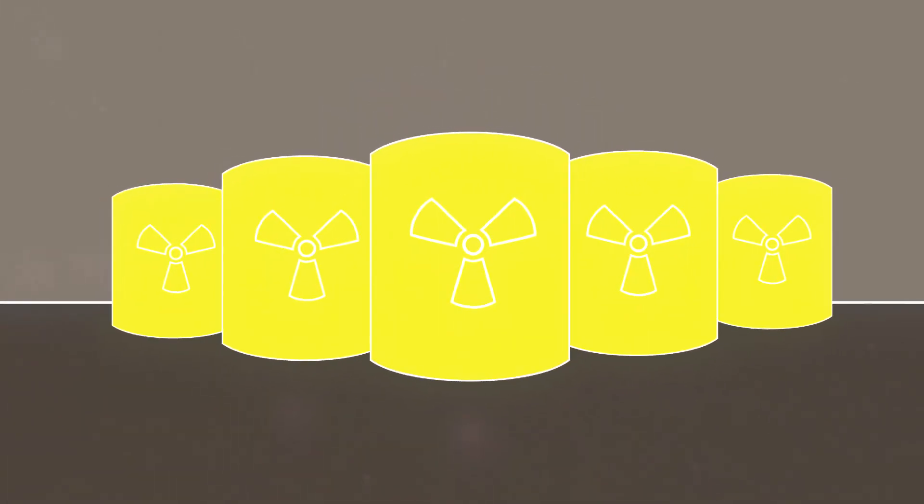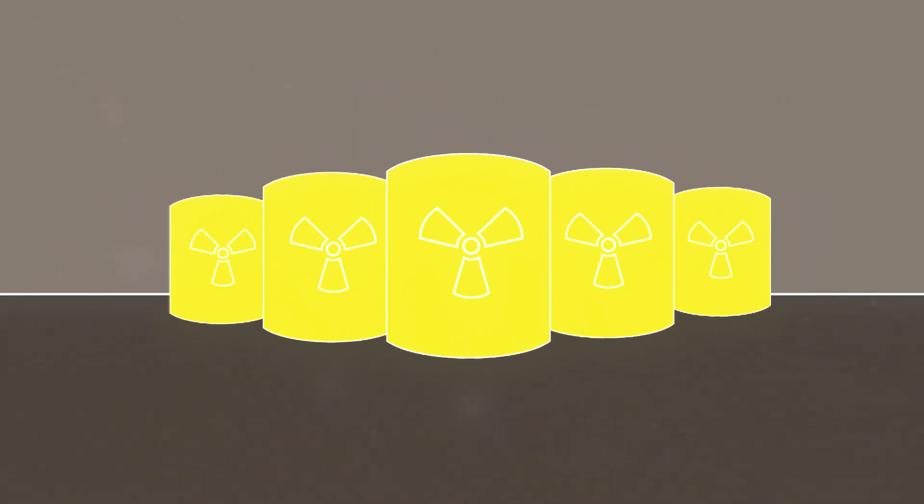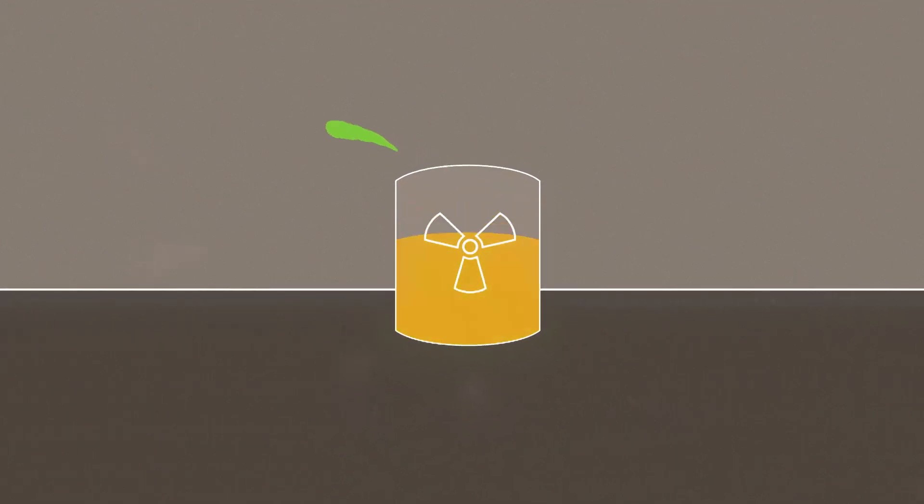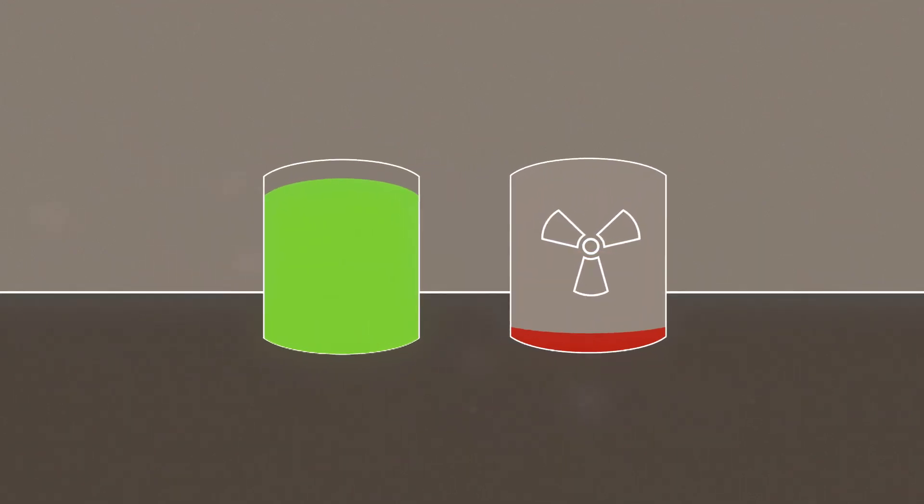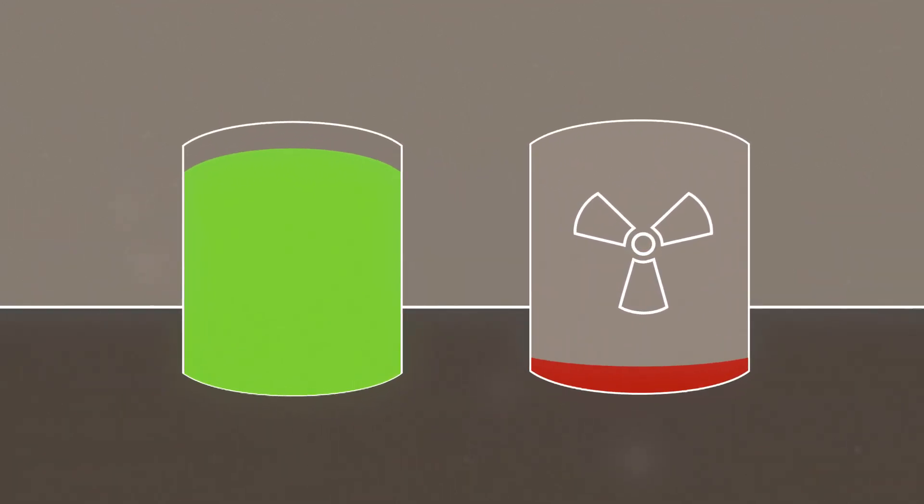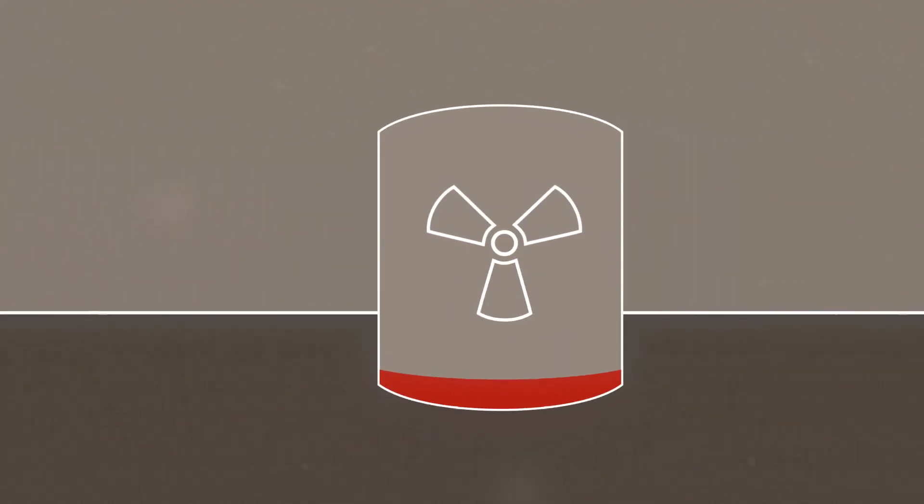There are some views that one way to perhaps reduce the volume of nuclear waste is to remove the fairly benign and not very bad stuff from the really very radioactive material that comes out.